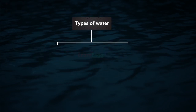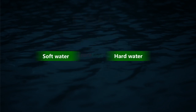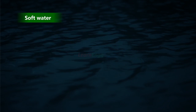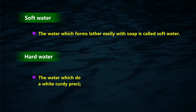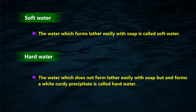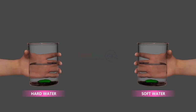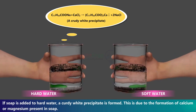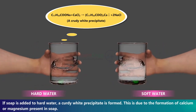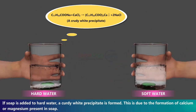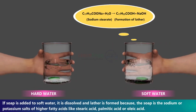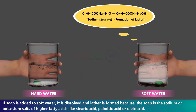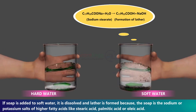Types of water: soft water and hard water. Soft water is the water which forms lather easily with soap. Hard water is the water which does not form lather easily with soap but forms a white curdy precipitate. If soap is added to hard water, a curdy white precipitate is formed due to the calcium or magnesium present. If soap is added to soft water, lather is formed because soap contains sodium or potassium salts of higher fatty acids like stearic acid.